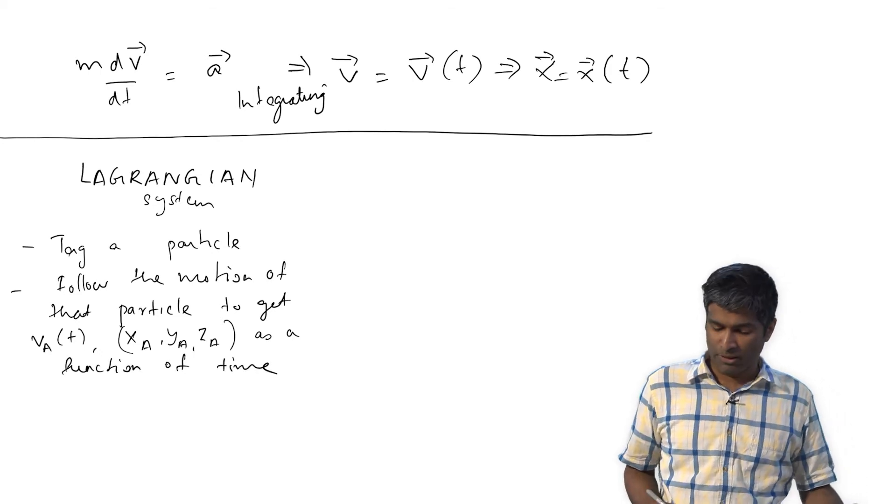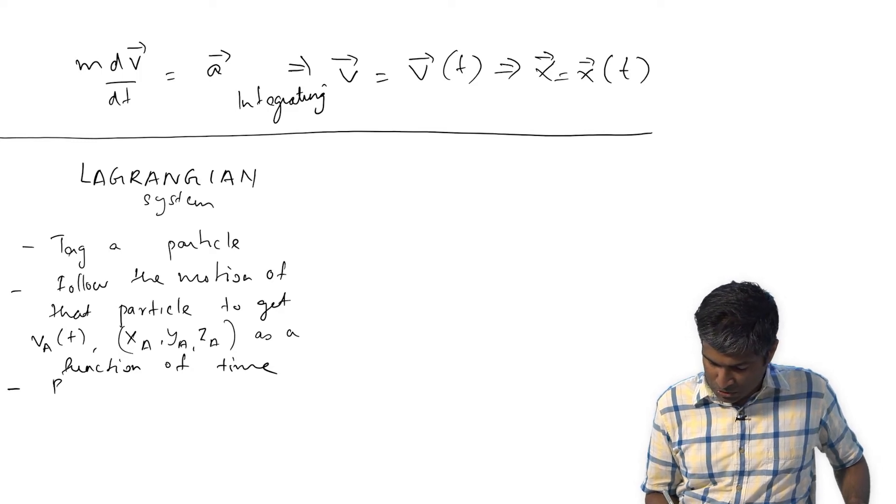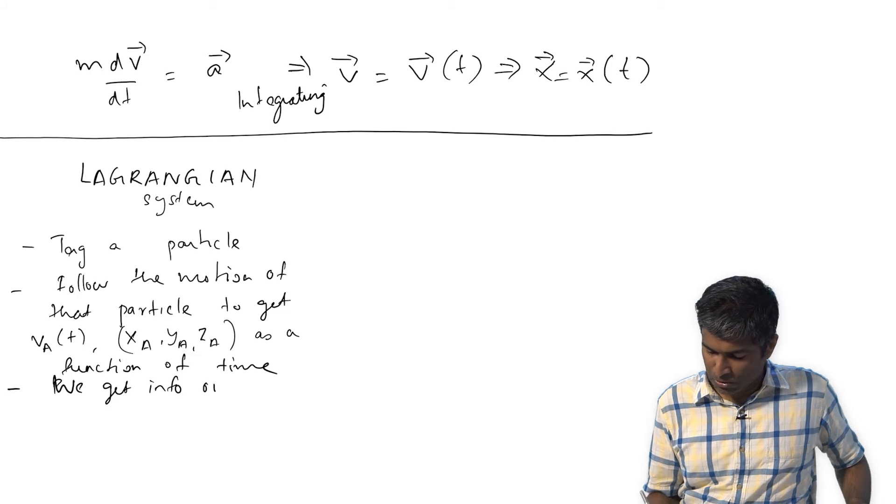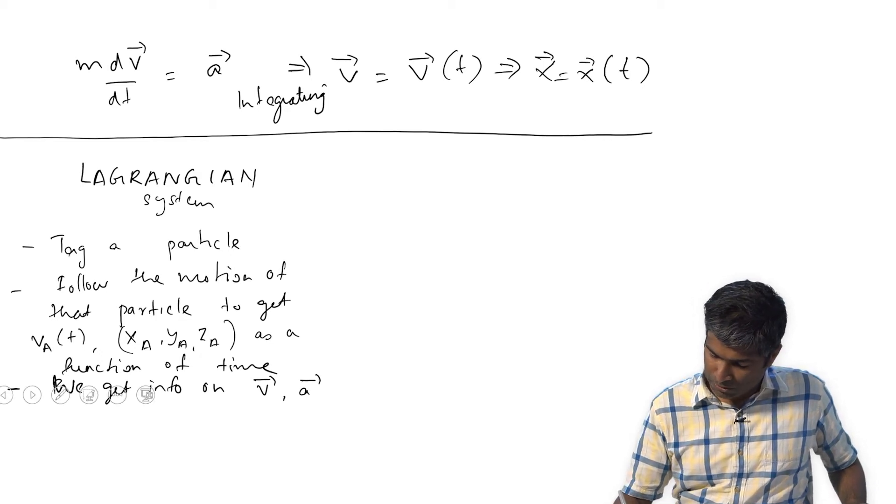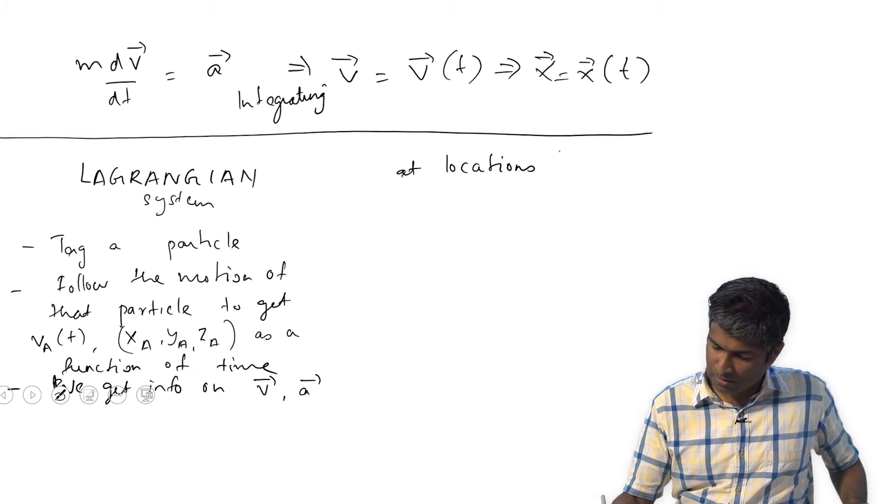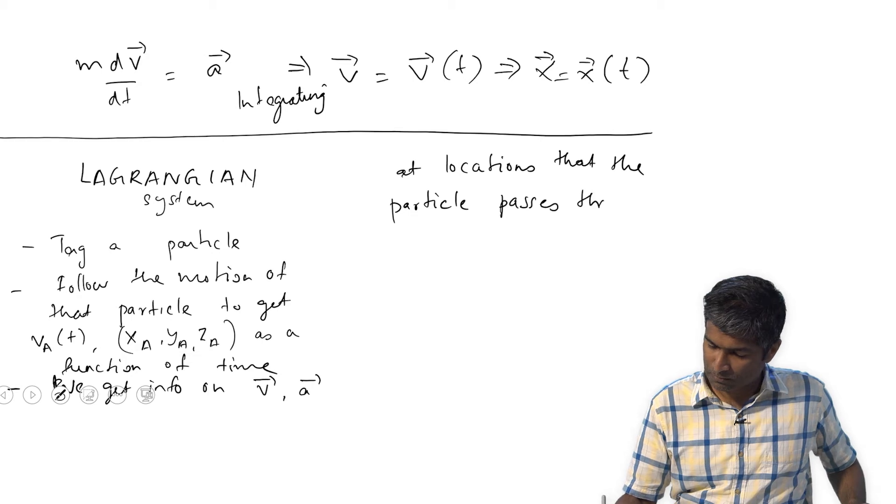That particle will trace out a path in space. That means we get info on v and a at locations that the particle passes through. So if I open a bottle of perfume at one end of the room, there are some molecules that travel in the direction of my nose. At some instant I know that there is a certain concentration of perfume molecules near my nose. I don't know anything about how that perfume molecule has spread in other regions of the room unless I put a sensor at other locations.